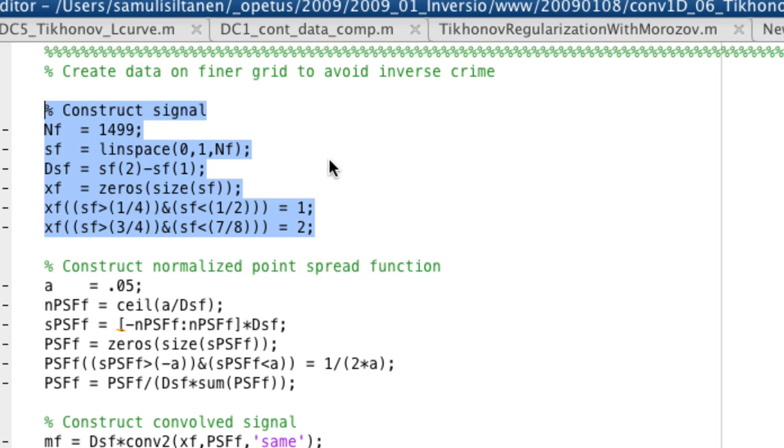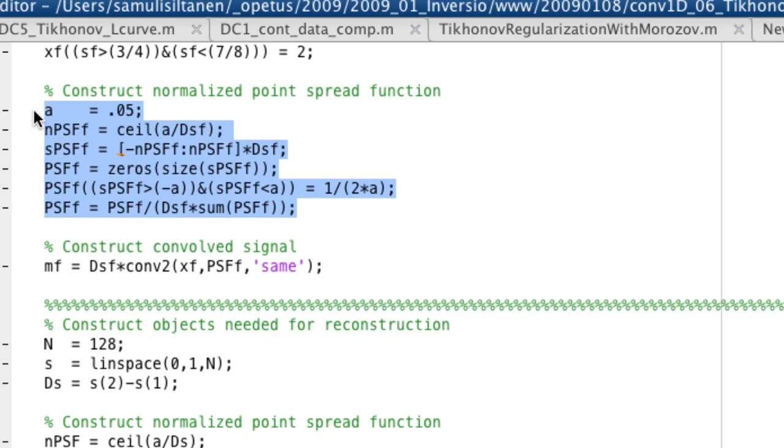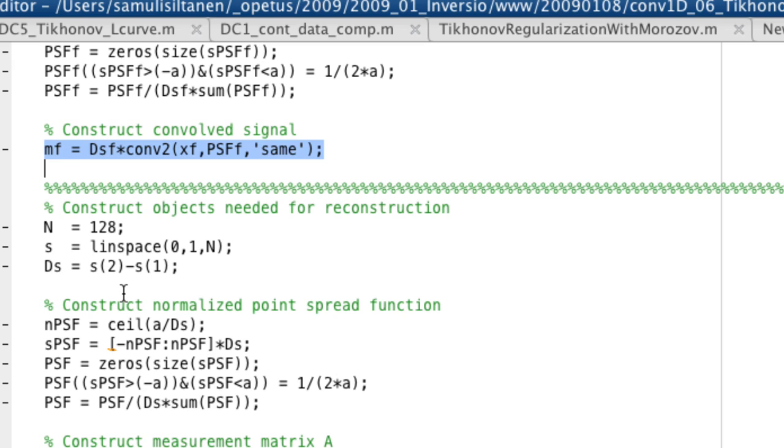So first of all, to avoid inverse crime, we do a very fine resolution signal as we did this year as well. A point spread function is constructed and here we do a convolution at the high resolution to get the higher resolution target.